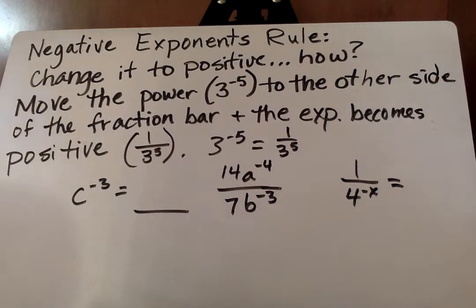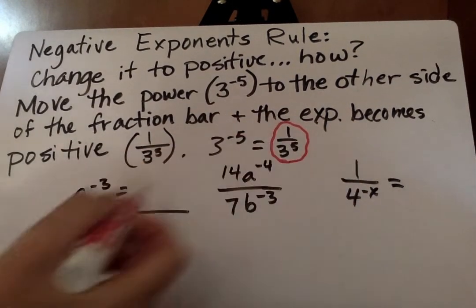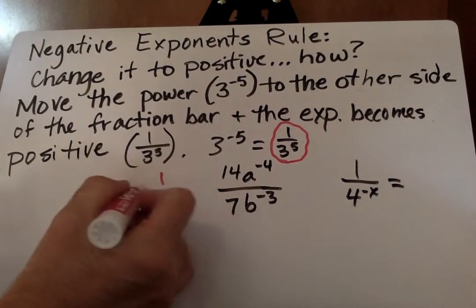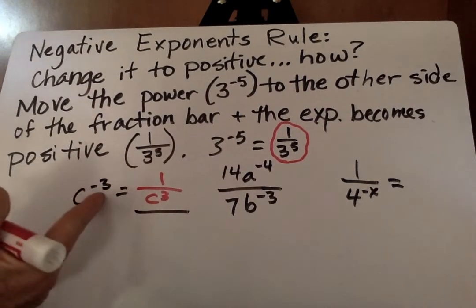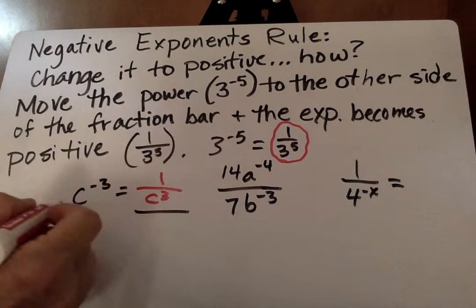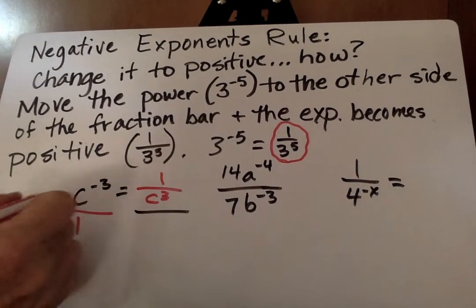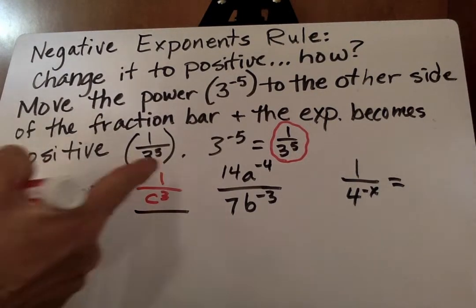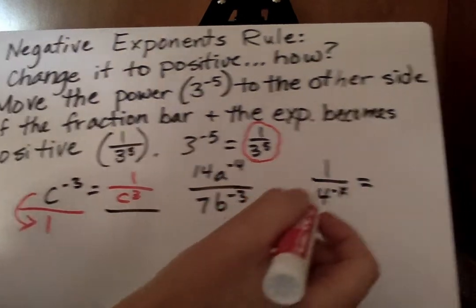Now we have some examples here. So you have your first one you can write right there. The next one, c to the negative 3 equals 1 over c to the third. See how it's negative here? Once we move it, and technically that's got an over 1, right? So if we move this downstairs to the basement, we put a 1 on top. You need something up there to show this is a fraction.